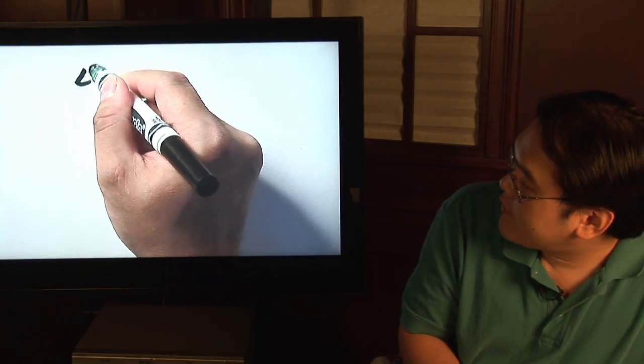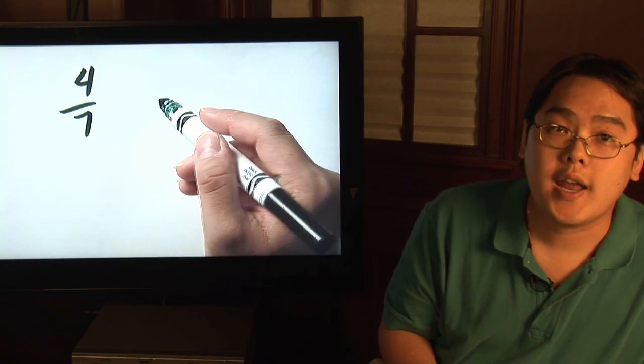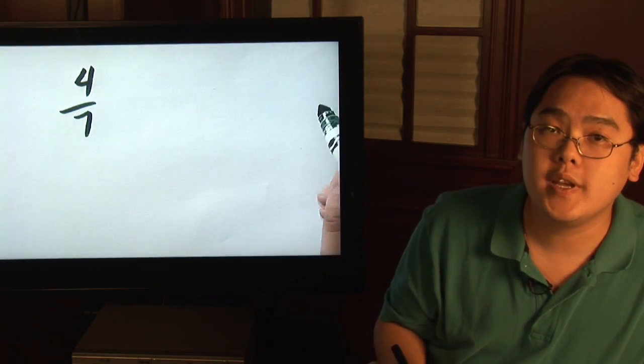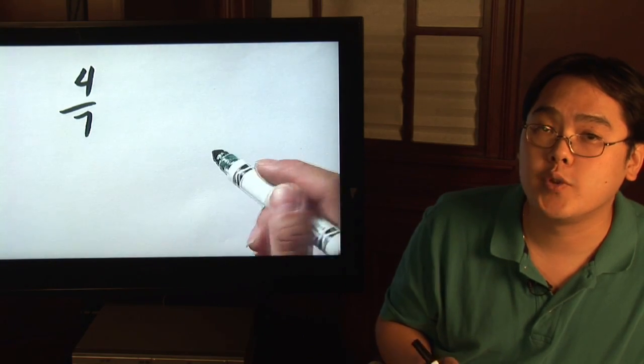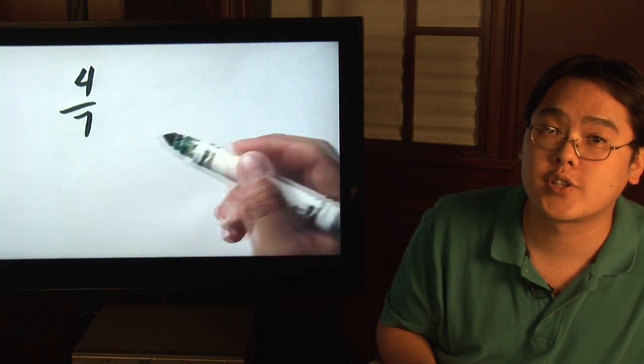Suppose you have a fraction in the vein of four over seven. The reciprocal is always going to be the fraction number flipped, and by design, when you multiply a number with its reciprocal, it's going to give you one.